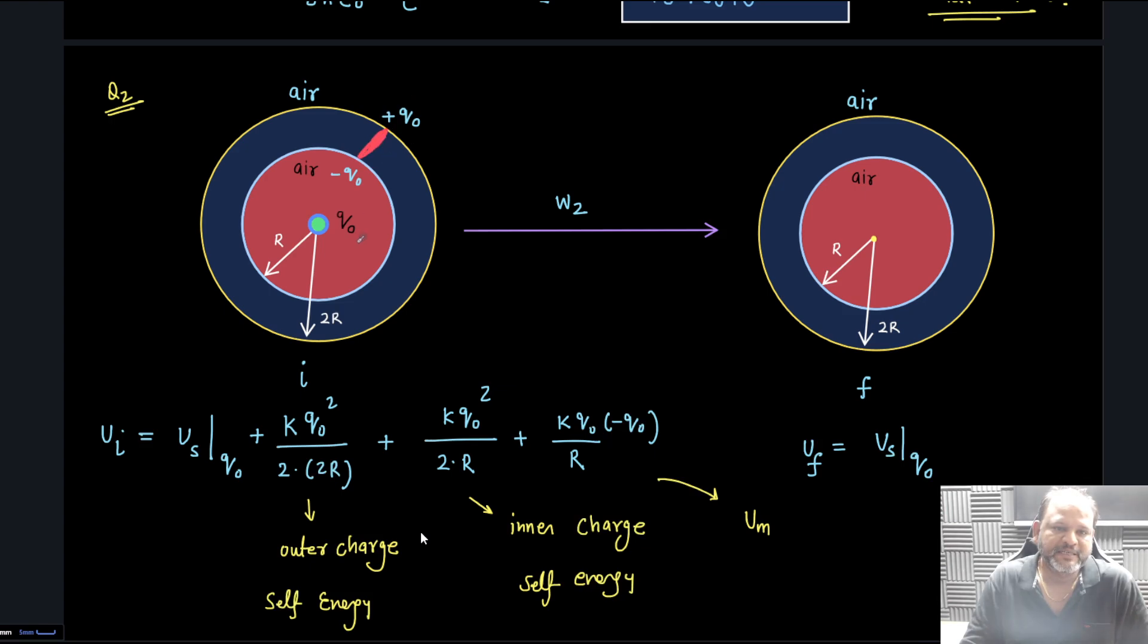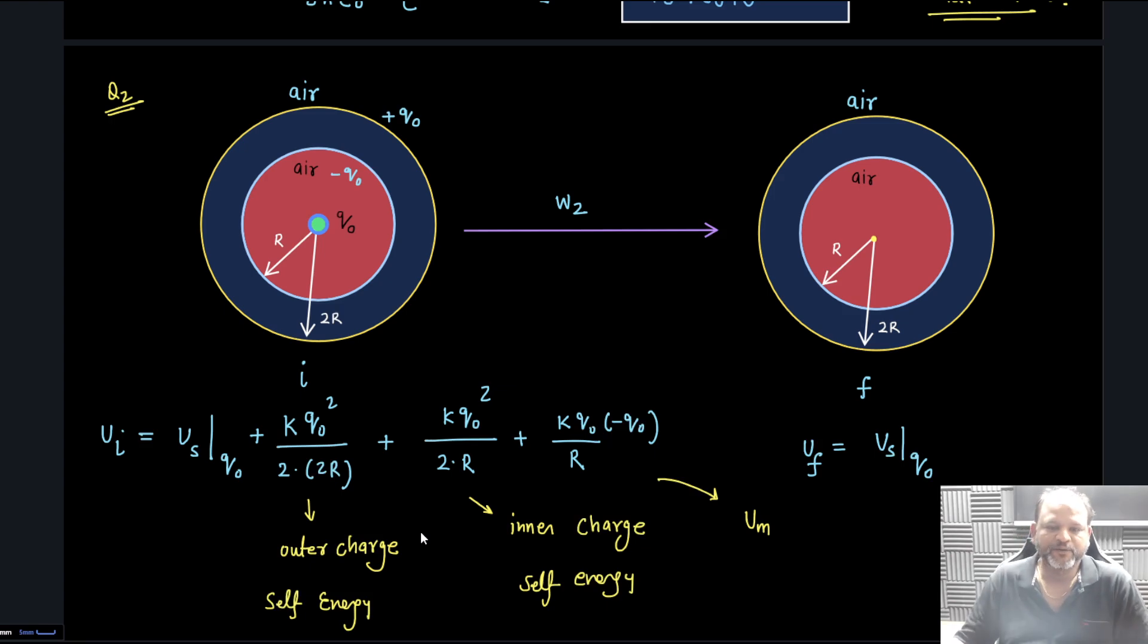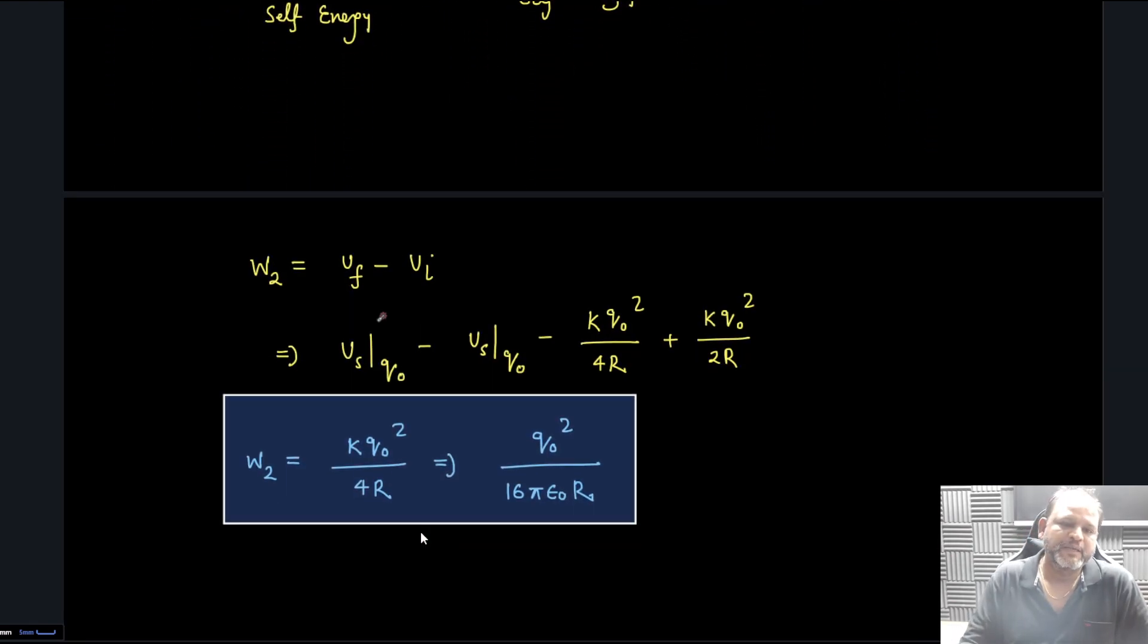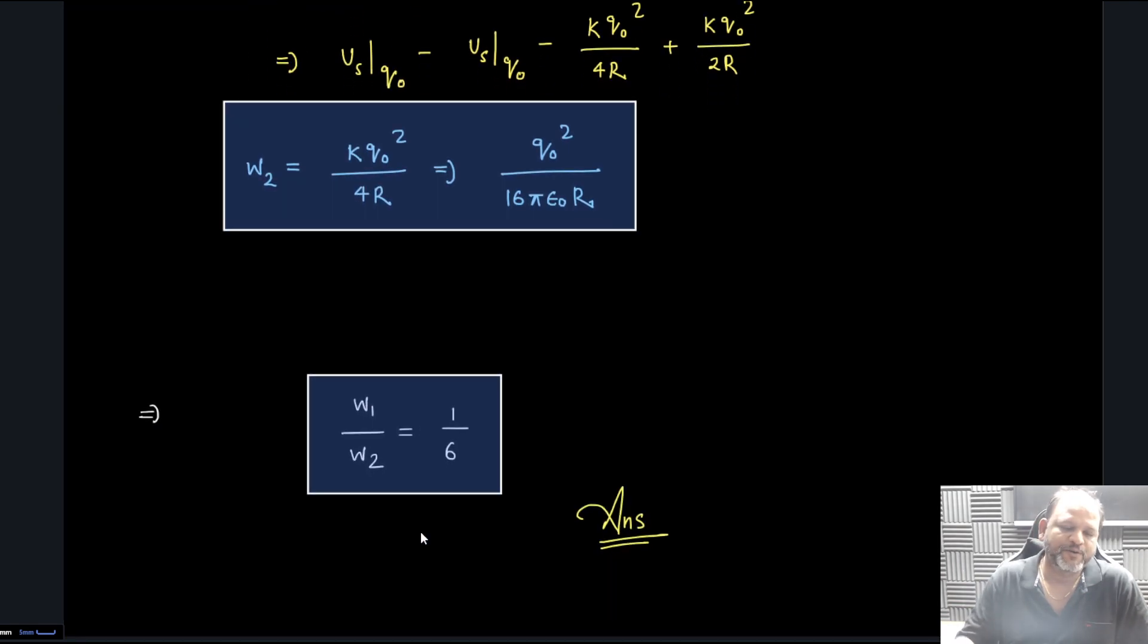Outer part energy stored kq naught square by 2r, k q naught square by 2 times 2r. W2 is going to be U final minus U initial. When I simplify this part is getting cancelled and I am getting kq naught square by 4r which is q naught square by 16 by epsilon naught r. Now W1 by W2 is going to be 1 by 6, this is the answer for this particular problem.